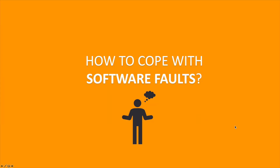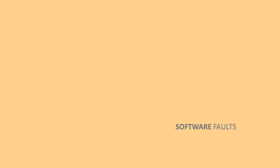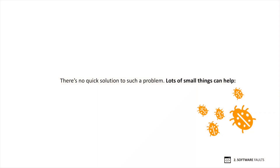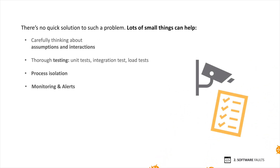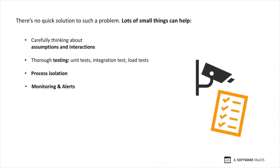So how do we cope with software faults? There's no quick solution. Lots of small things can help: carefully thinking about assumptions and interactions, thorough testing, process isolation, and monitoring and alerts.